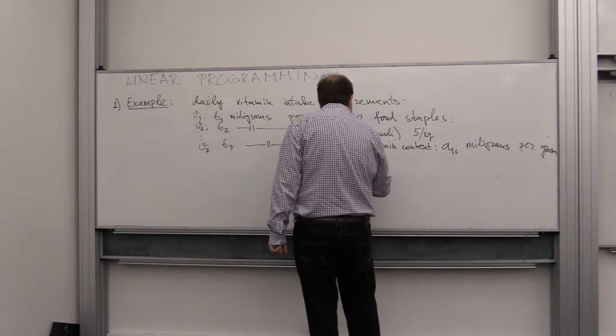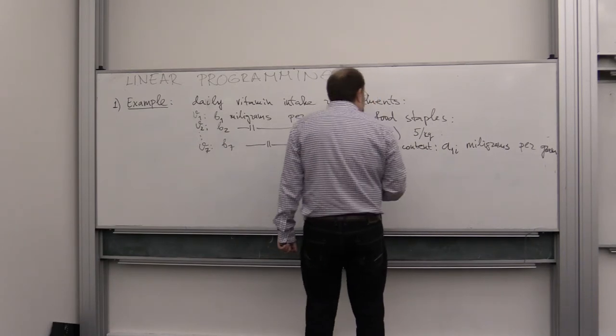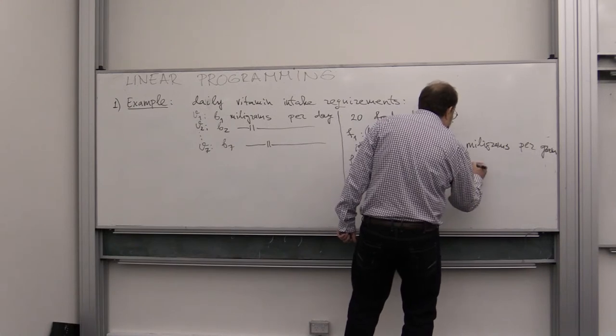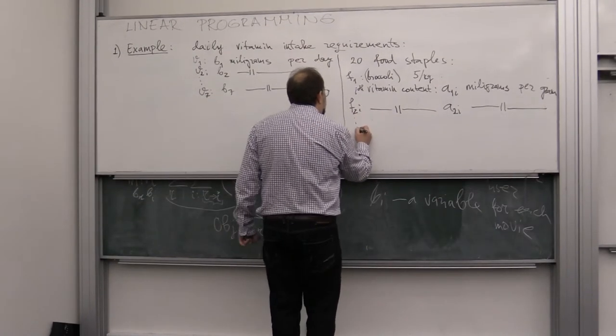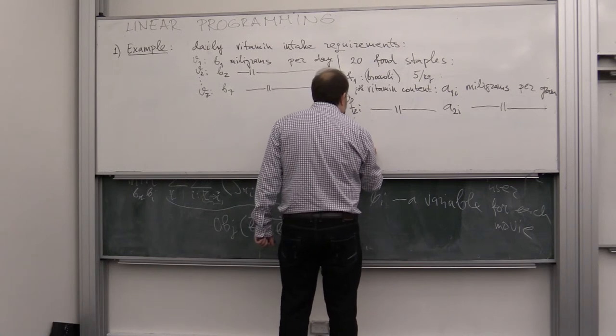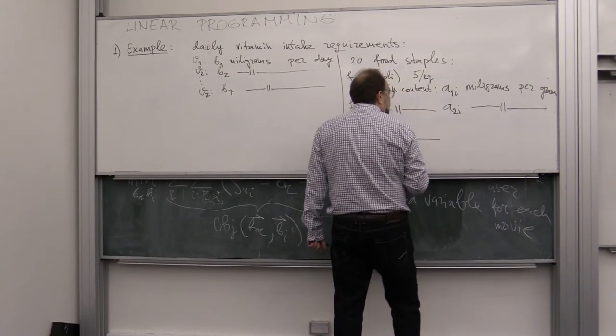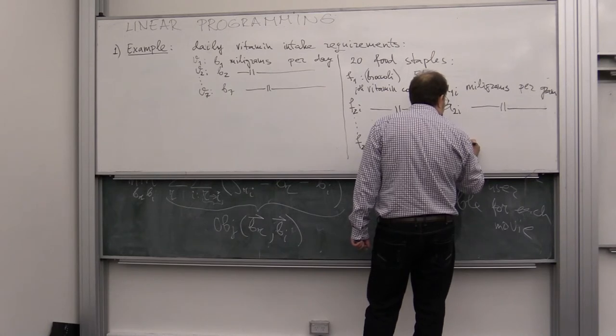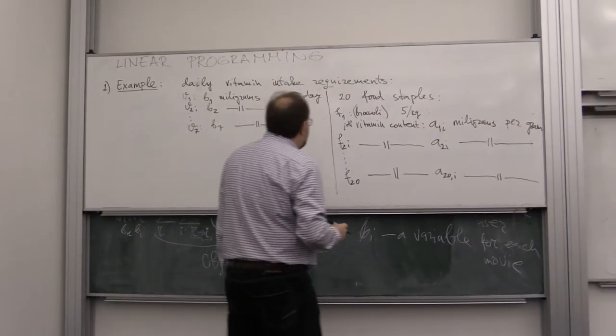And then you have another variety of food that has vitamin content A2i milligrams per gram of food, all the way down to F20, and the vitamin content A20i milligrams per gram.